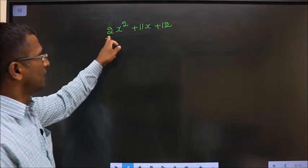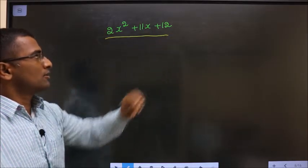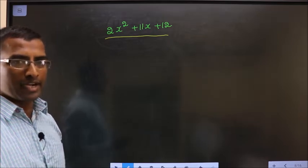Factorize 2x square plus 11x plus 12. How do we factorize?